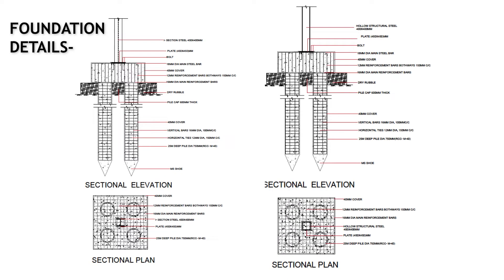Coming to the substructure. Pile foundation is being provided for both the columns. Foundation detail of I-section steel column used for the core is on left, and foundation detail of hollow structural steel column used for diagrid framing is on right.